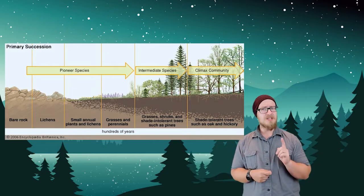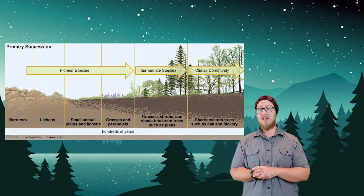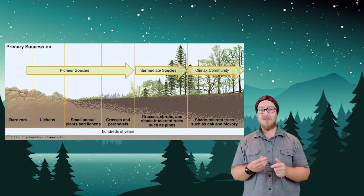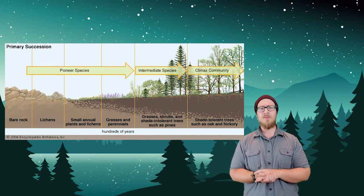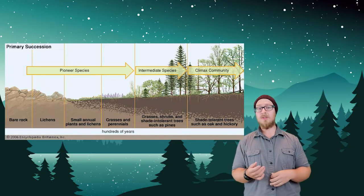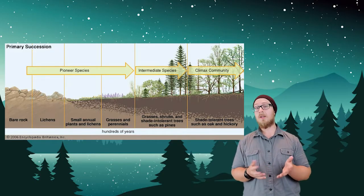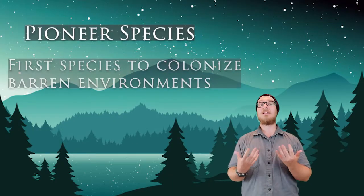This is the first step to soil formation. As this happens, and as small layers of soil are built, other hardy plant species like perennial flowers and grasses will begin to colonize the area. We call these organisms pioneer species.